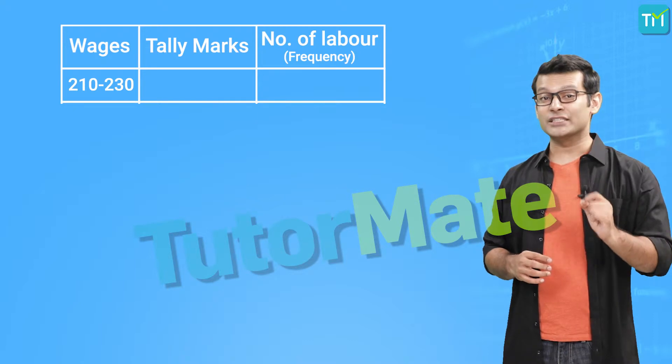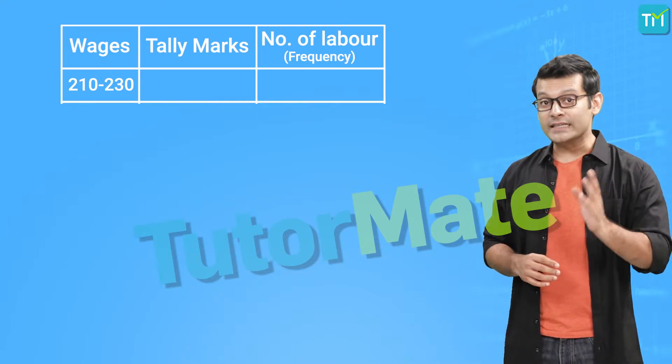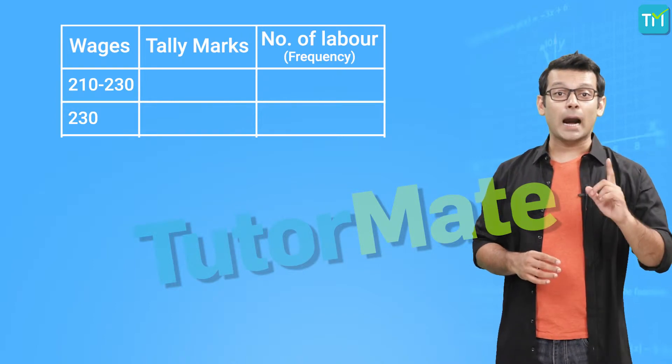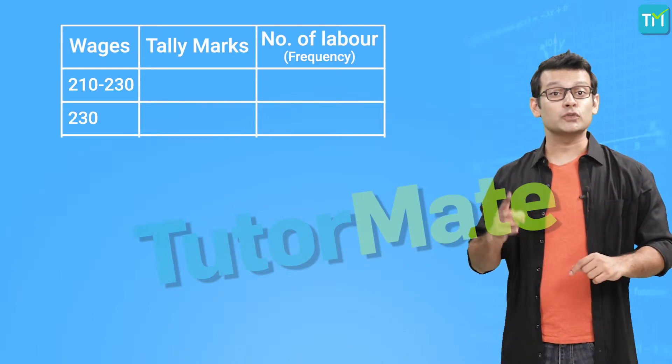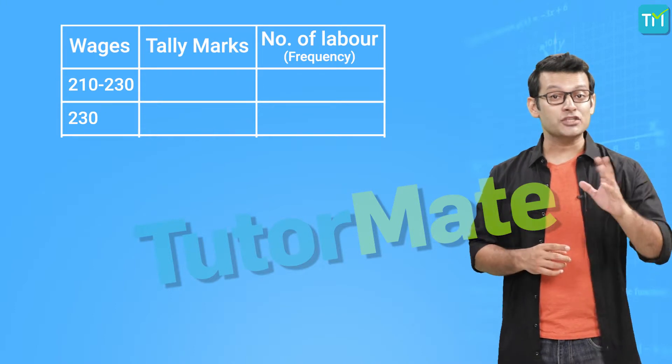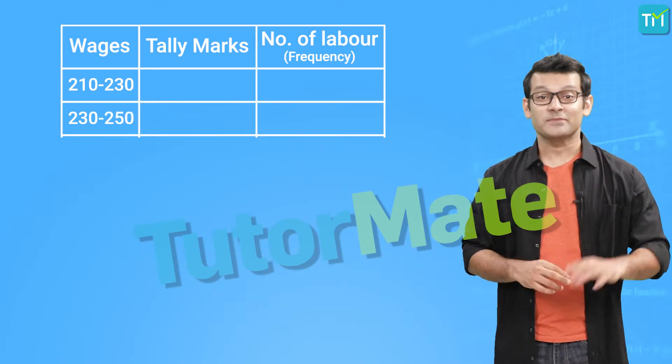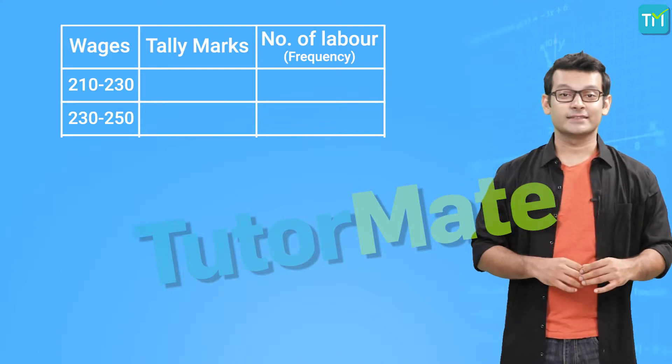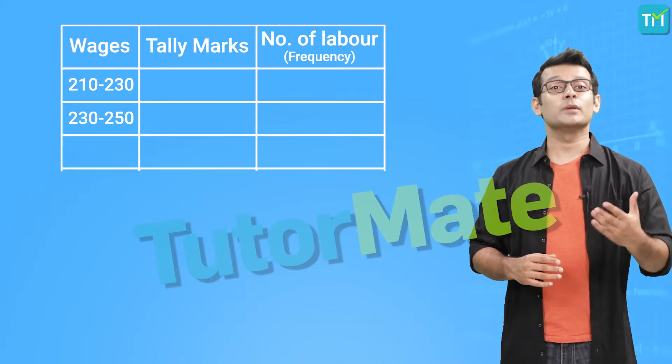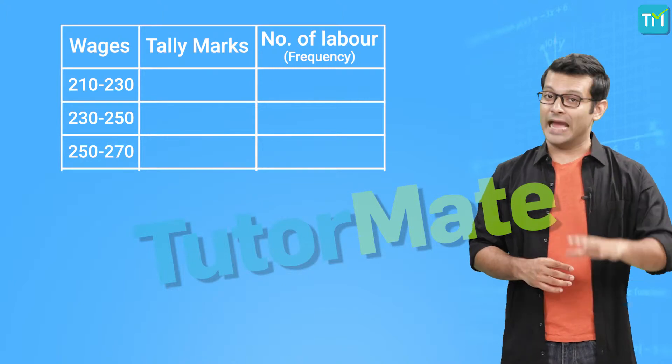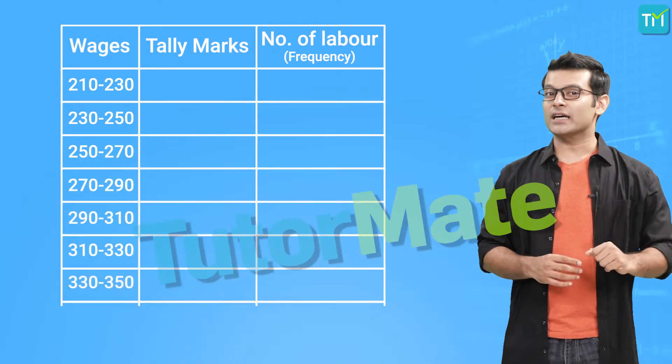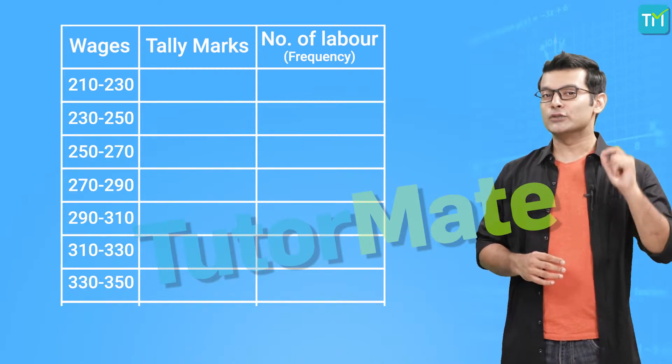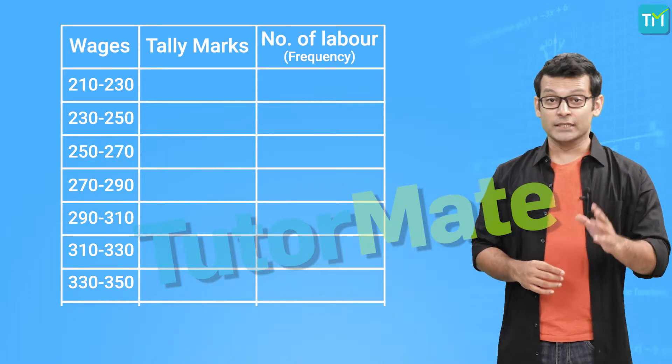Therefore, the next class should start with 230, and since the width is equal to 20, the upper limit of the second class is 230 plus 20, which is equal to 250. Hence we have a second class as 230 to 250, and similarly the next class will be 250 to 270, and so we have seven classes in total with the last class being from 330 to 350.